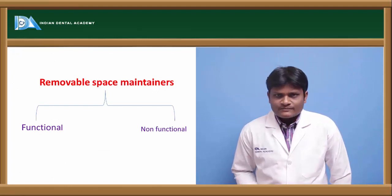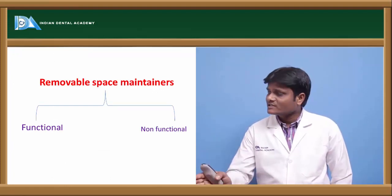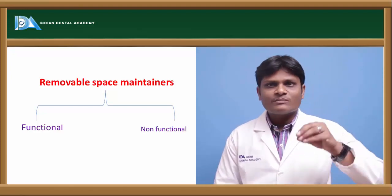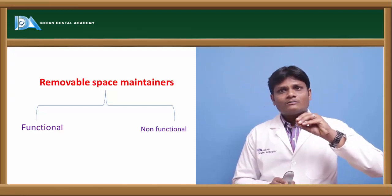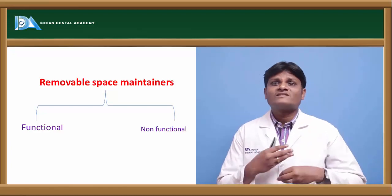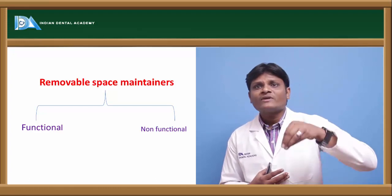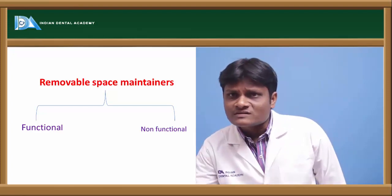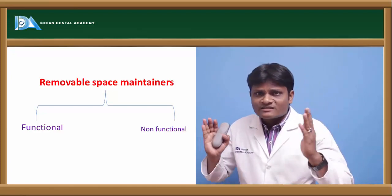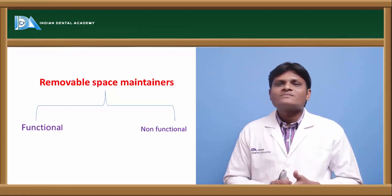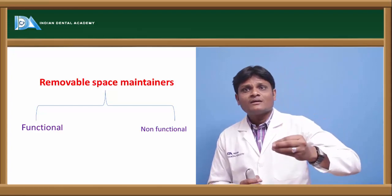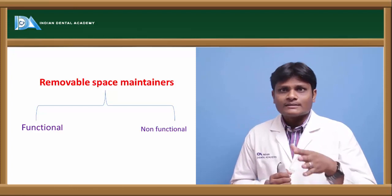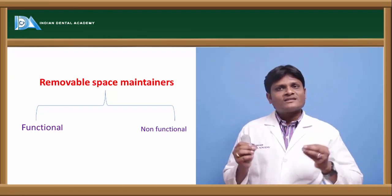Removable space maintainers can be classified into functional and non-functional. A functional space maintainer serves the function of the missing tooth and facilitates normal stomatognathic functions, in addition to maintaining the space. A non-functional space maintainer is just a piece of acrylic that spans the edentulous area, preventing migration of adjacent teeth. In other words, functional space maintainers carry teeth for the missing area, whereas non-functional space maintainers are a simple acrylic plate covering the edentulous area to prevent encroachment of adjacent teeth.